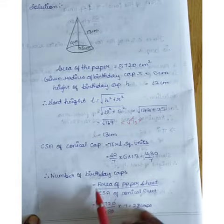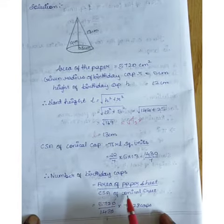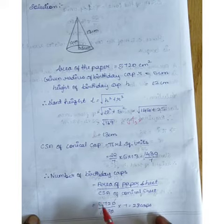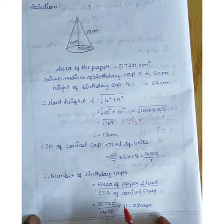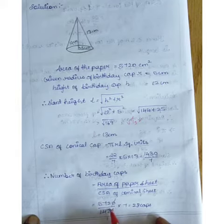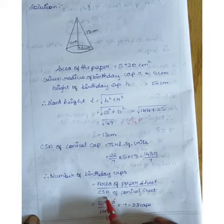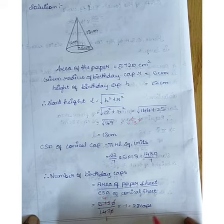Number of caps equals area of paper sheet divided by curved surface area of cone: 5720 ÷ (1430/7) = 5720 × 7/1430 = 4 × 7 = 28 caps.